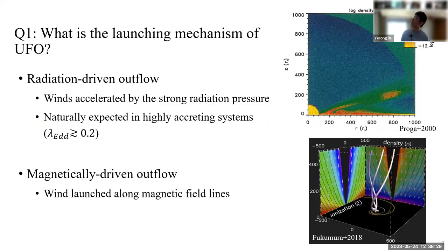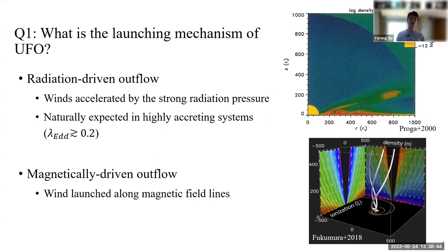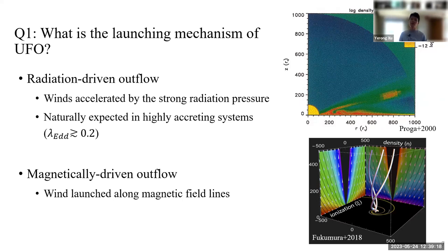The first open question: what is the launching mechanism of UFOs? One popular theory is radiation-driven outflow, where the wind is accelerated by strong radiation pressure. It is natural to expect this kind of outflow in a highly accreting system. The upper right plot shows simulations confirming this kind of outflow indeed exists in high-Eddington AGN, and they tend to be in the equatorial direction. Another popular theory is magnetically driven outflow, where the wind is launched and accelerated by magnetic field lines, tending toward the polar direction. Since my talk focuses on UFOs around highly accreting supermassive black holes, I will focus more on the first scenario.